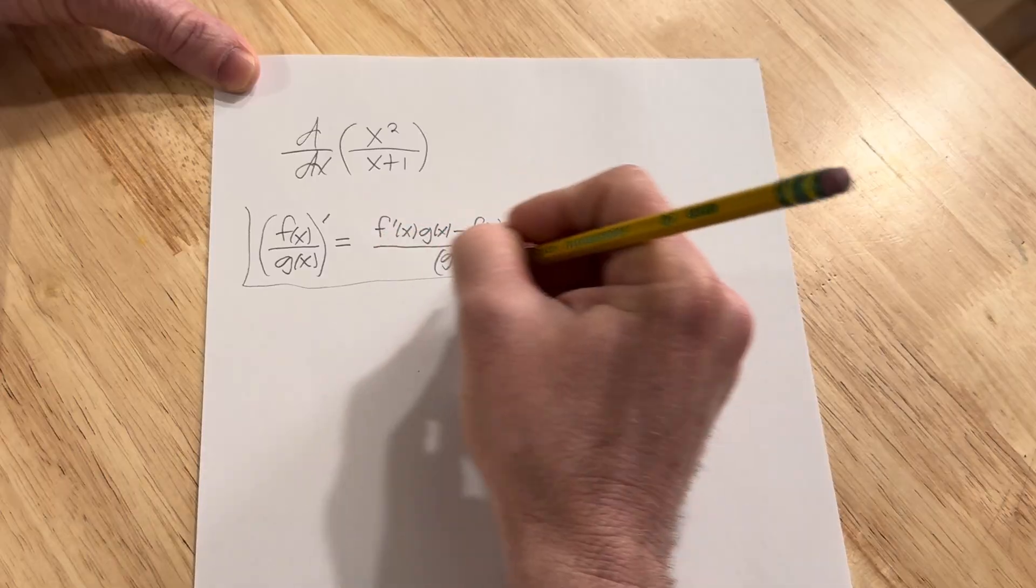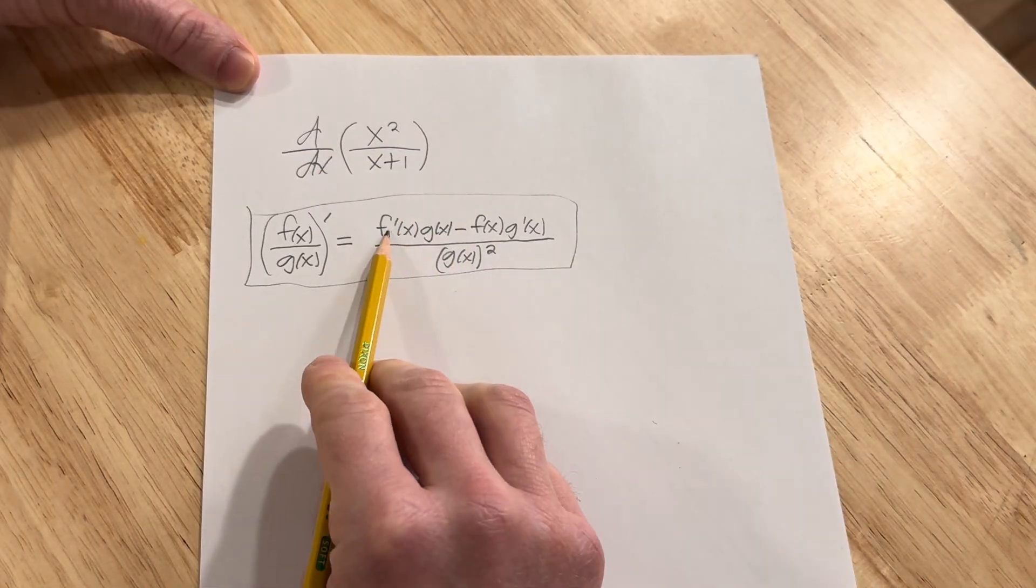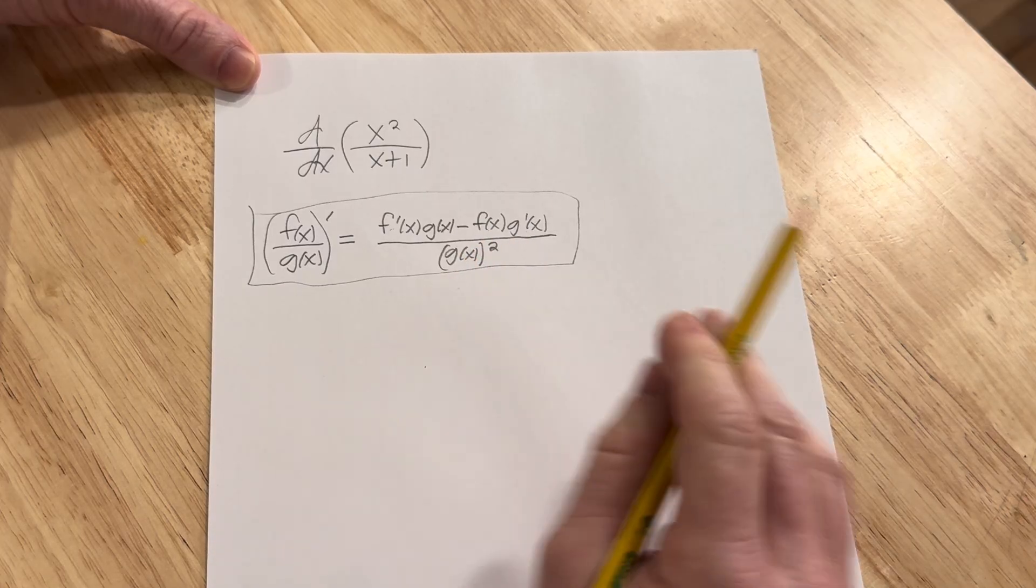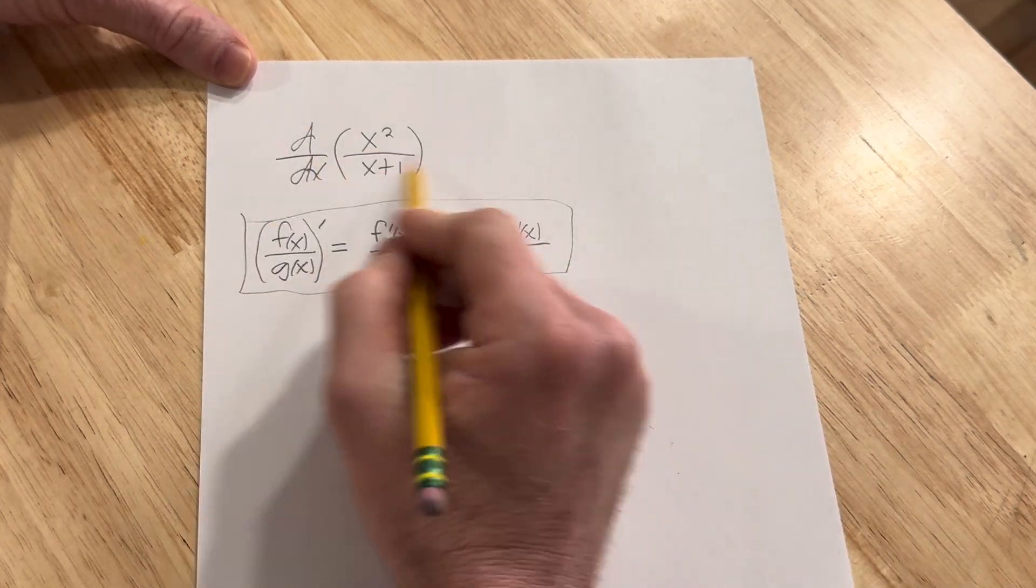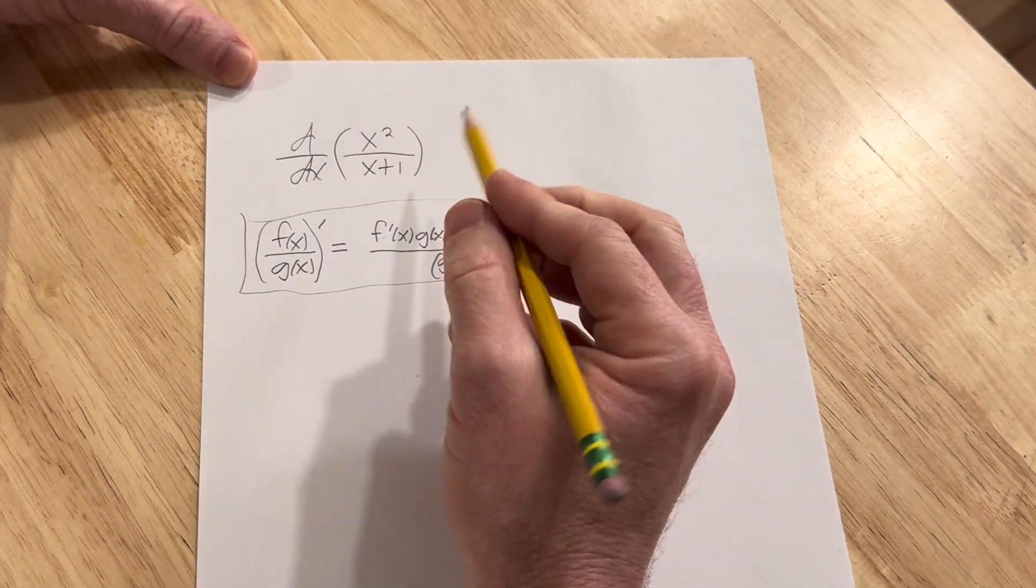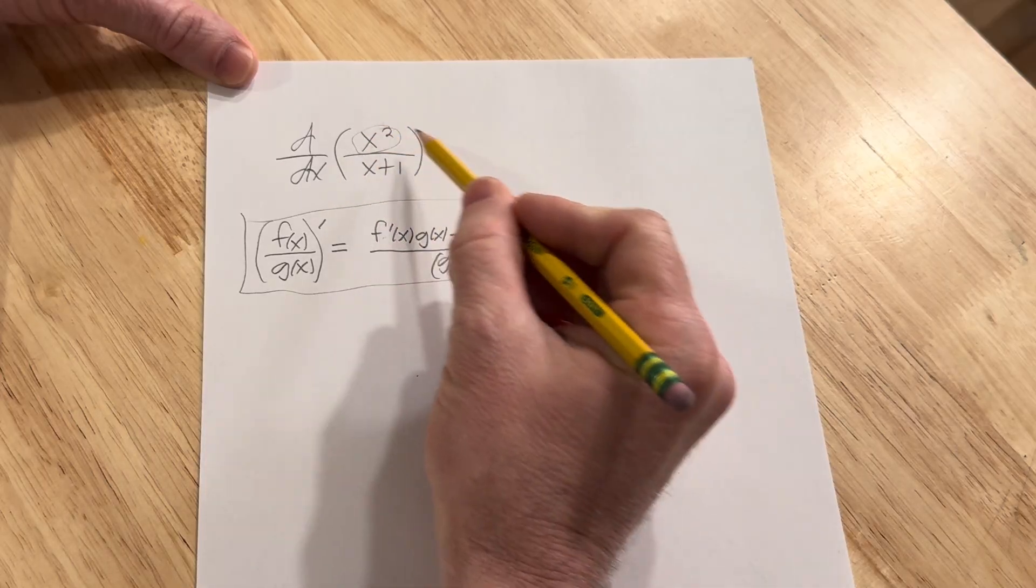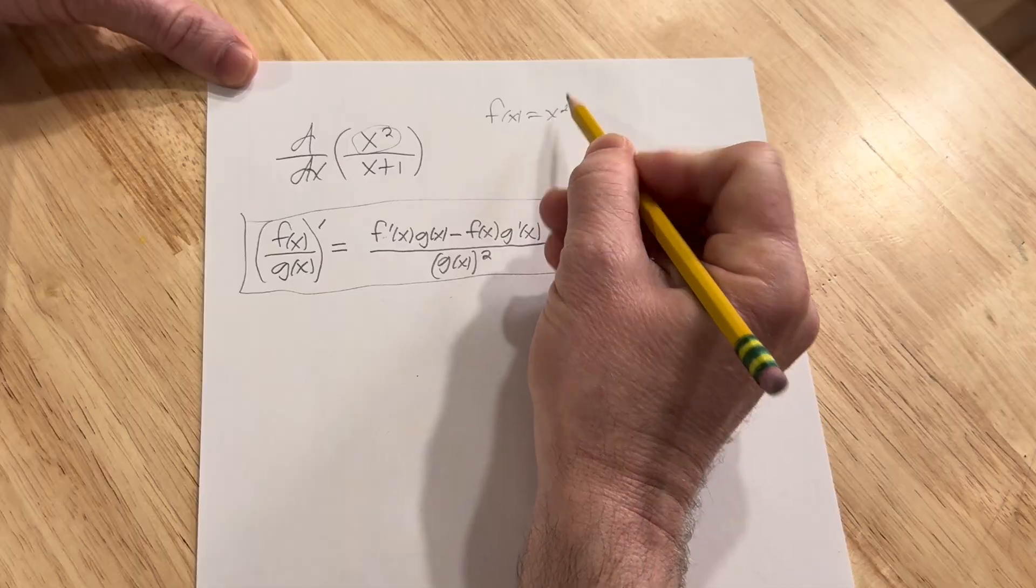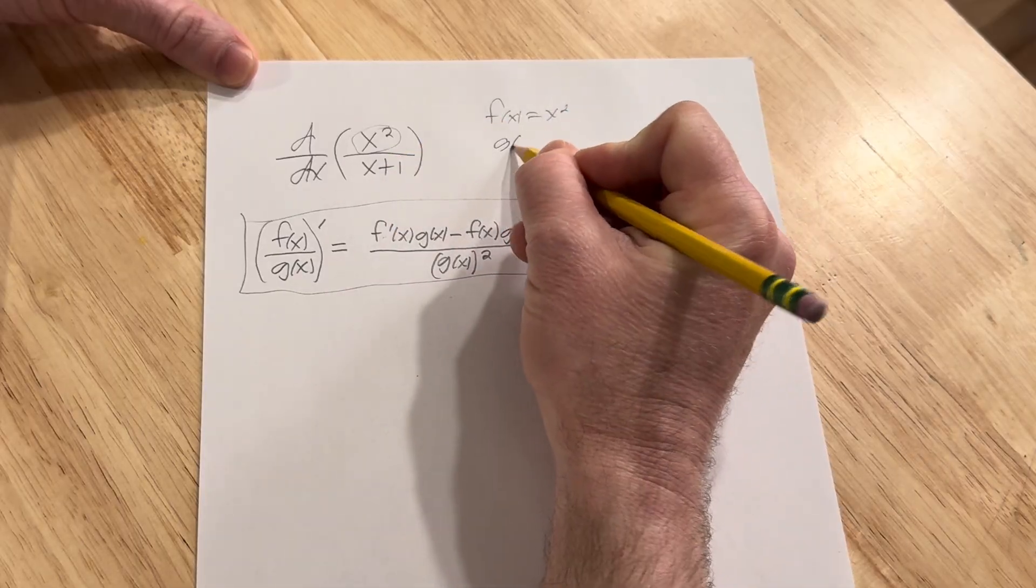So this is called the quotient rule from calculus, and again it's the derivative of the top times the bottom minus the top times the derivative of the bottom over the bottom squared. Let's apply it here to this particular quotient. So in our example, x squared is our f of x, and x plus 1 is our g of x.